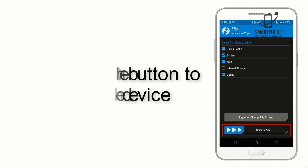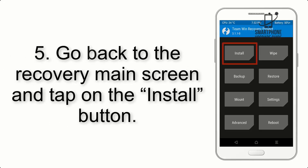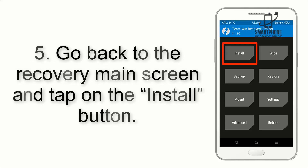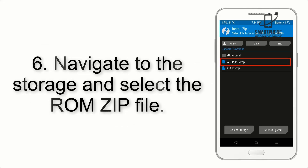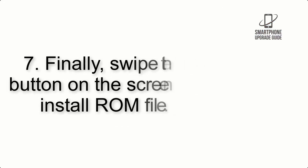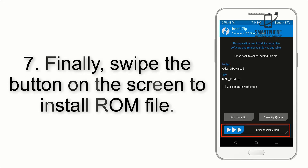Step 4: Swipe the button to wipe the device. Step 5: Go back to the recovery main screen and tap on the Install button. Step 6: Navigate to the storage and select the ROM zip file.